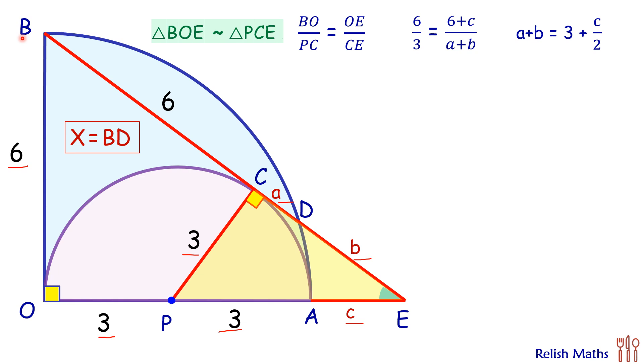Now here we'll take another ratio for both the triangles. We are taking ratio of BO upon PC equals to BE, that's the hypotenuse, upon PE, hypotenuse of another triangle. So BO upon CE that's 6 upon 3, and BE is 6 plus A plus B, and PE is 3 plus C.